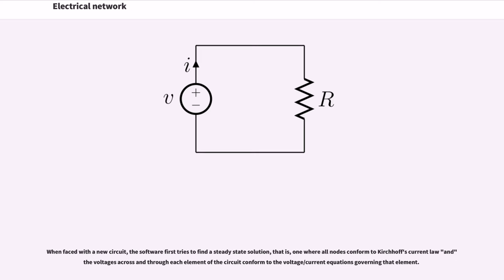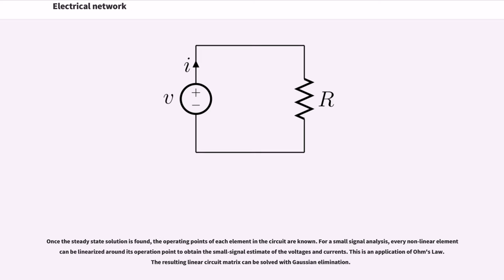When faced with a new circuit, the software first tries to find a steady state solution, that is, one where all nodes conform to Kirchhoff's current law and the voltages across and through each element of the circuit conform to the voltage slash current equations governing that element. Once the steady state solution is found, the operating points of each element in the circuit are known.